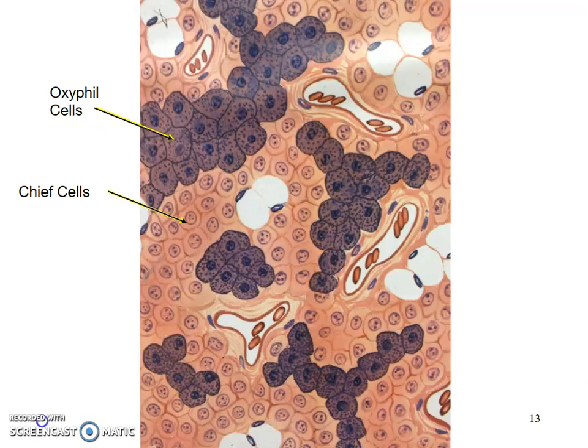The other cells are what we refer to as chief cells. Chief cells are the lighter stained cells and the more numerous cells of the parathyroid gland. They are actually releasing a hormone called parathyroid hormone, which is responsible for increasing blood calcium levels when blood calcium levels become too low.